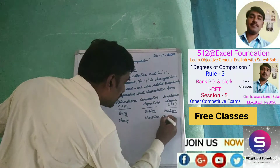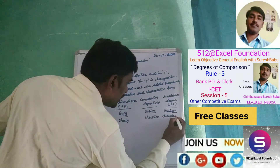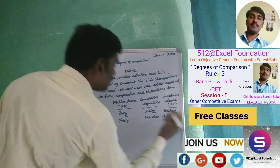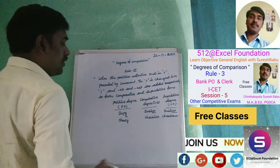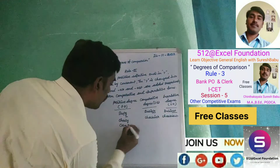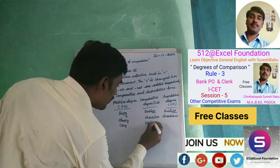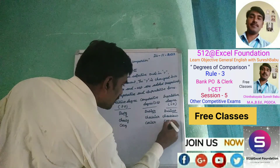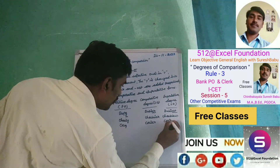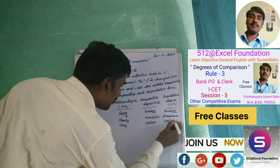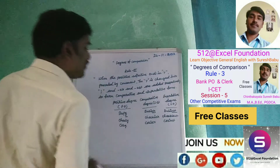Cheeky — cheekier — cheekiest. That's how we get the three forms. Cozy — cozier — coziest. Cozy, cozier, coziest — that's how we get the three forms.